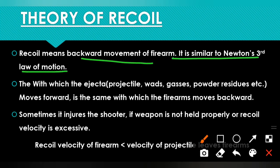If you are firing, you will see at firing time — this is a firearm, and if you are firing, this is a barrel. There is a forward movement of the bullet, and there is a corresponding backward movement of the firearm.